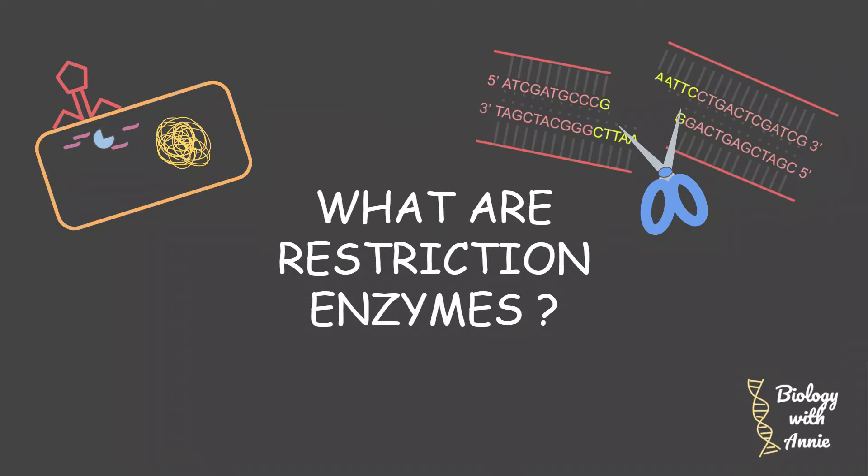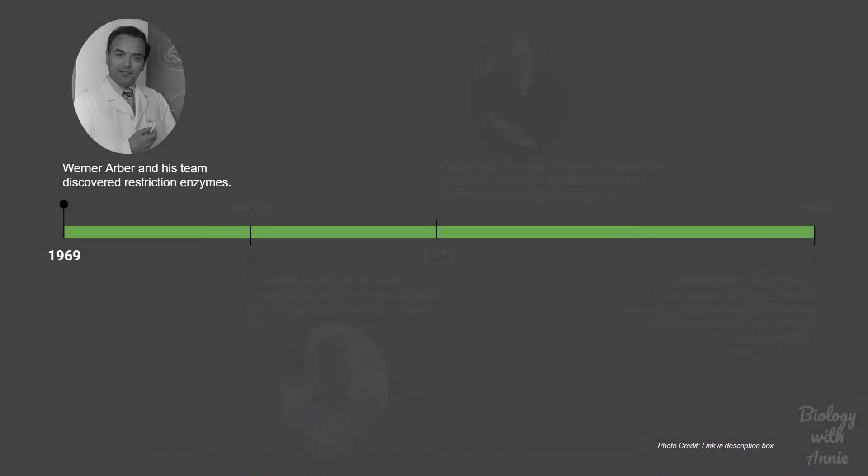Hi everyone, welcome to my channel, this is Biology with Annie. Today I am going to be explaining about restriction enzymes. Restriction enzymes were first discovered in bacteria by a Swiss microbiologist named Werner Arbor in 1969. He was trying to understand how bacteria protects itself from viral invasion when he came across this discovery.